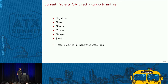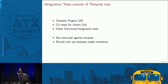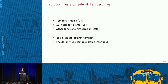The projects we support are Keystone, Nova, Glance, Cinder, Neutron, and Swift. These tests are part of the Tempest suite and executed as part of the integrated gate, meaning every change that runs the integrated gate runs all tests for all these projects. Other tests live in Tempest plugins in different repositories, CLI tests for Python clients, and other functional and integration tests using different parts of Tempest's stable APIs. Those tests are only executed against changes in their own repositories, so they should only use the stable interface of Tempest.